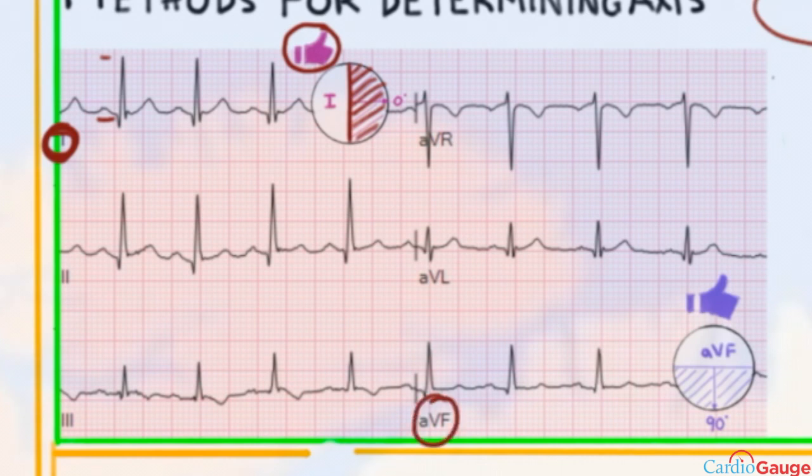Then you look at lead AVF. And you look to see if it's positive. And this one is. So since it's positive, both of these are thumbs up. And that's generally a good thing that's going to be a normal axis. When lead AVF is positive, this is defined as positive for AVF 90 degrees. That means you're in the bottom half of the circle.